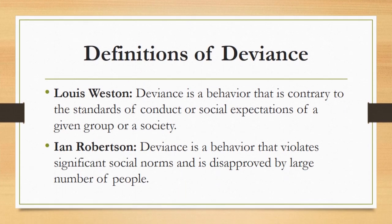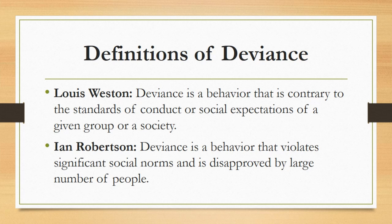Now we will study two definitions of deviance. The first one is given by Lois Weston. According to him, deviance is a behavior that is contrary to the standards of conduct or social expectations of a given group or society. The second definition is given by Robertson. According to him, deviance is a behavior that violates significant social norms and is disapproved by a large number of people. Both definitions support the argument that deviance is to go against the accepted norms.